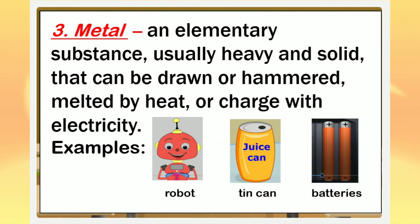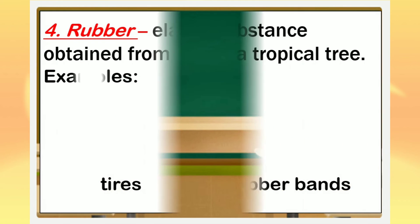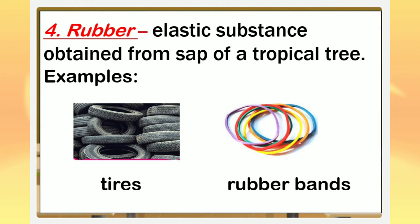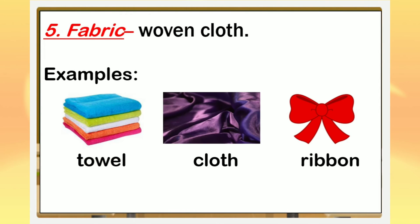Another one is metal. It is an elementary substance, usually heavy and solid, that can be drawn or hammered, melted by heat, or charged with electricity. These are the different examples of materials made up of metal. Next is rubber — it is an elastic substance obtained from the sap of a tropical tree. These are the different examples of materials made up of rubber. Next is fabric — it is a woven cloth. These are some examples of materials made up of fabric.